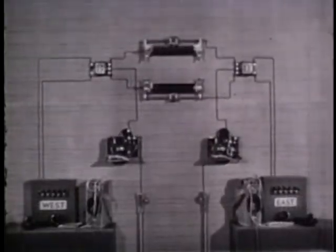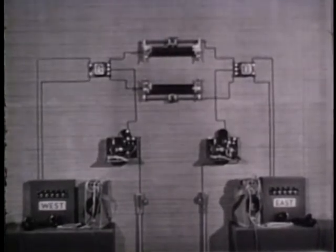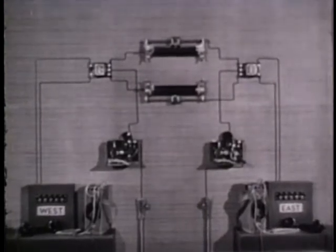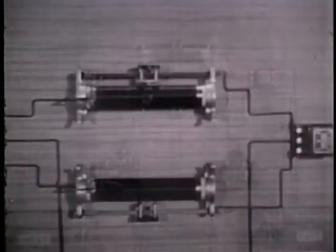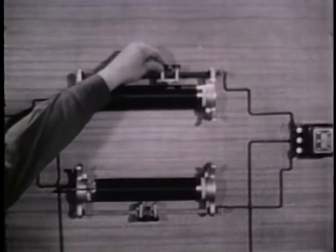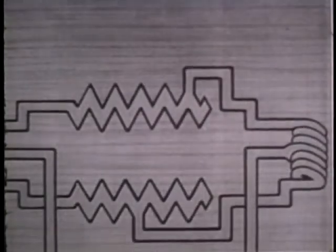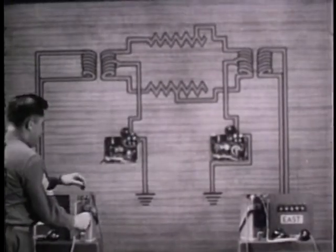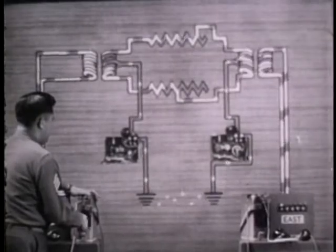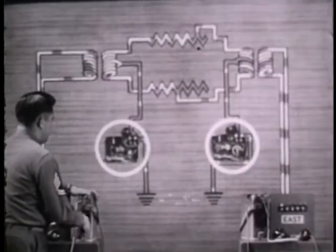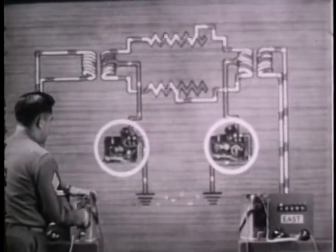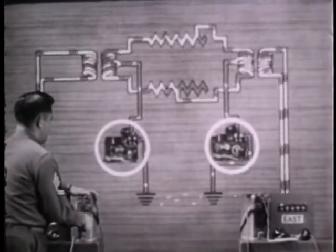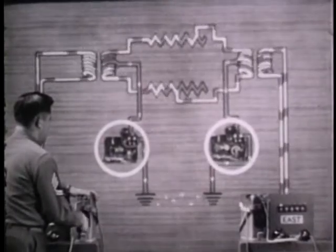Here is our circuit restored to normal. The resistances of the two line wires are equal — the circuit is balanced. But sometimes the resistance of one wire is greater than that of the other. A bad splice in one wire can cause this. Now the circuit is unbalanced. Because of the unequal resistances, ringing current flows through the telegraph sets. But unless the unbalance is great, the amount of diverted ringing current will be too small to actuate the telegraph relays.